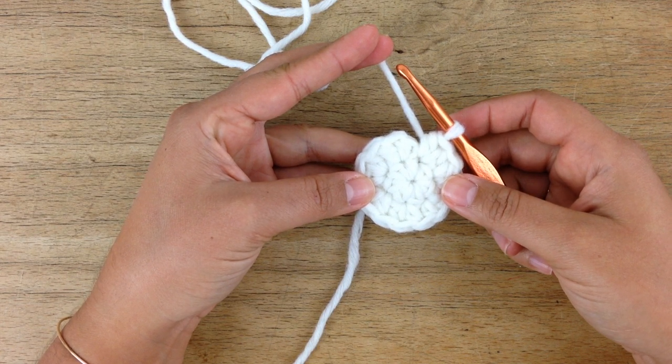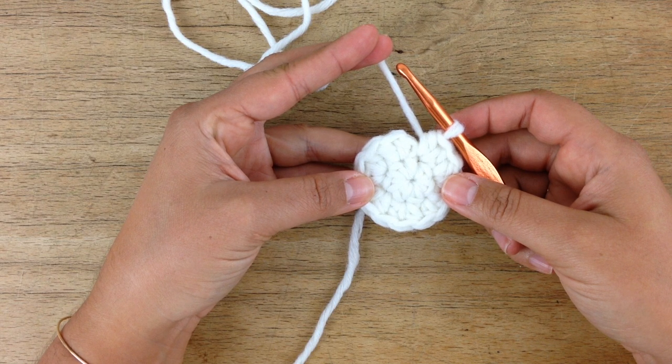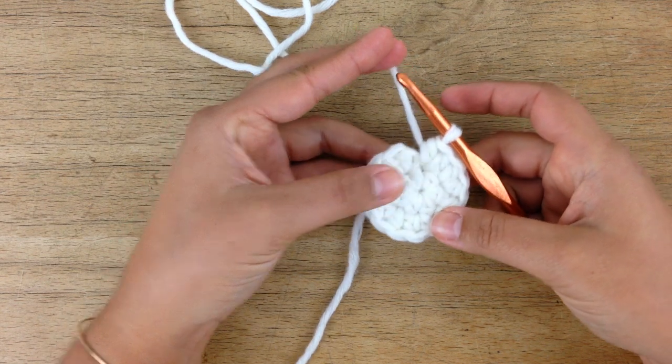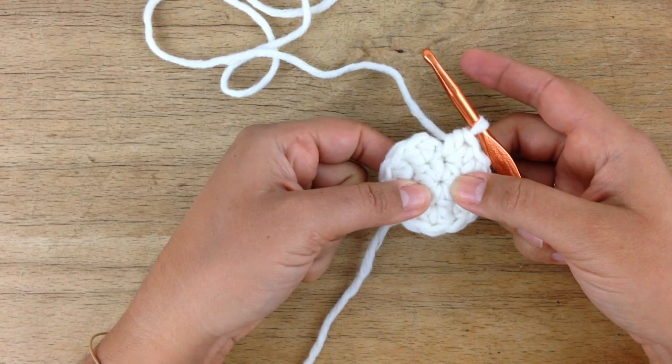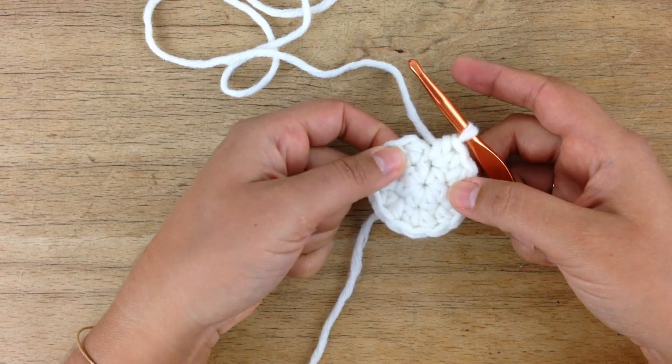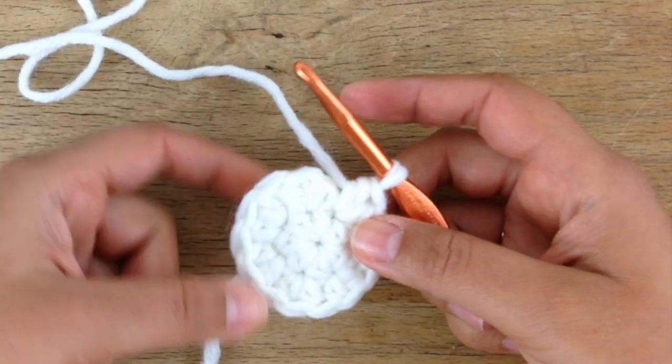The other is to start with a magic ring, which is what I did. A magic ring ultimately will lead to a non-existent hole in the middle, which I prefer in my projects.